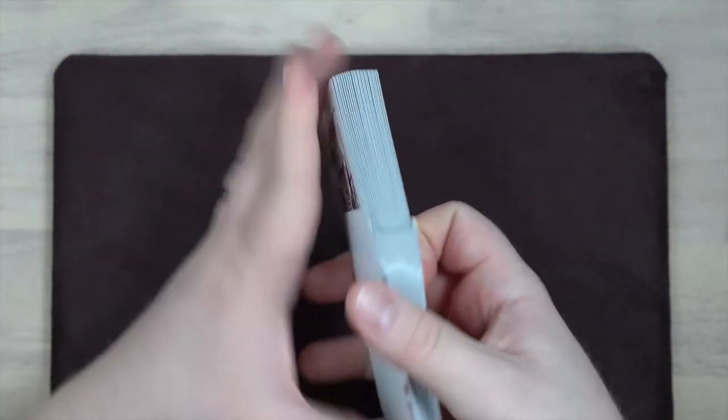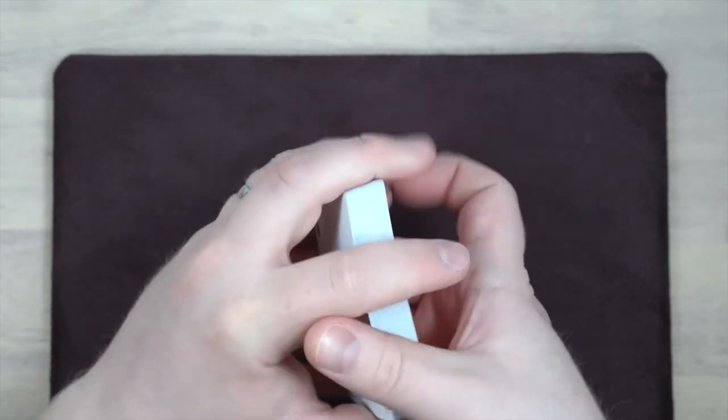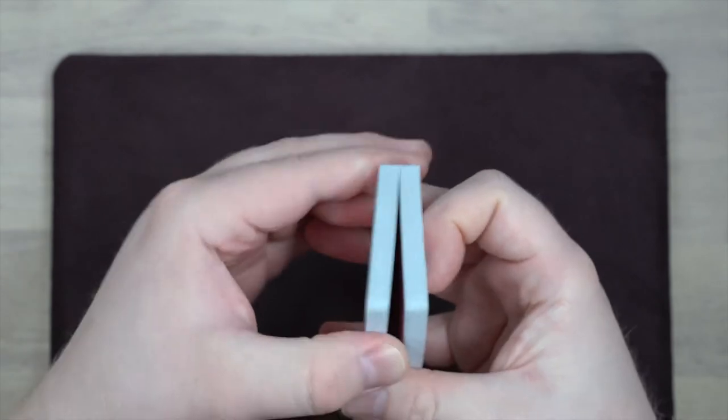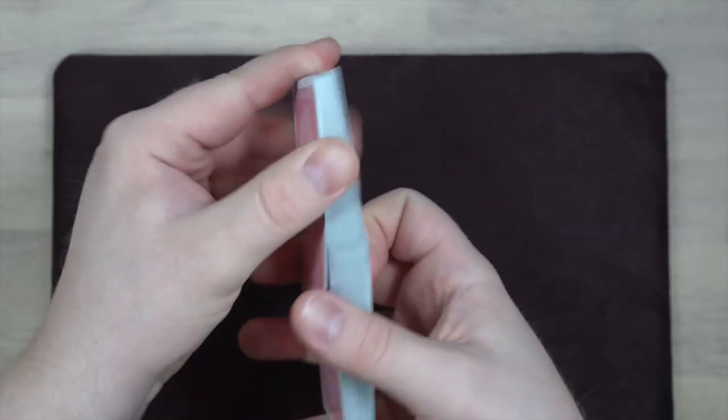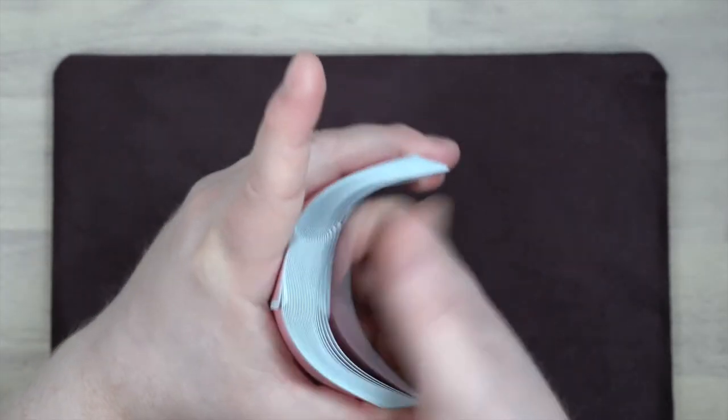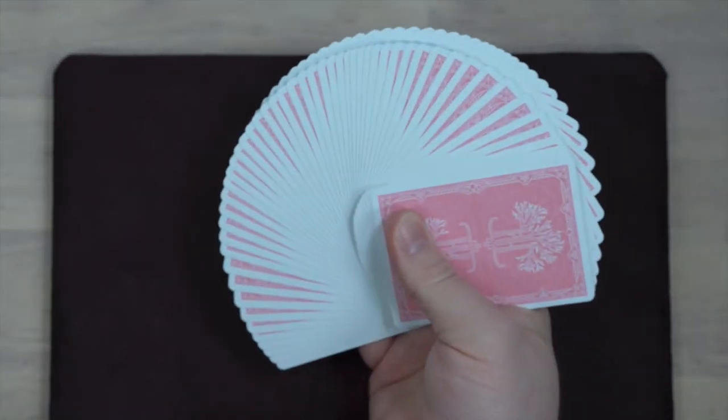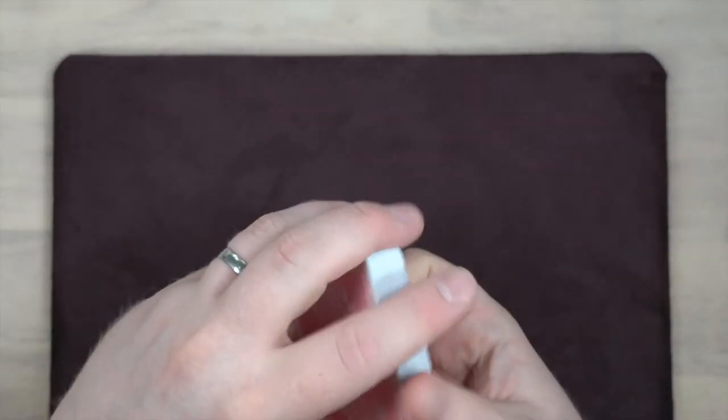And then in terms of shuffle preference, you'll want to break it in just a little bit in order to get them to shuffle equally easily from either direction. Out of the box, they're going to shuffle a little more easily for you backs to faces. But fanning, springing, all of that, very much what you would expect from USPC.